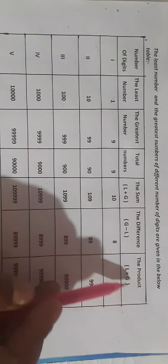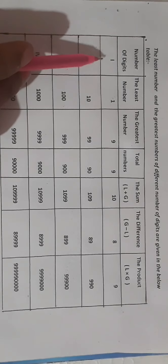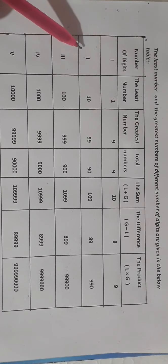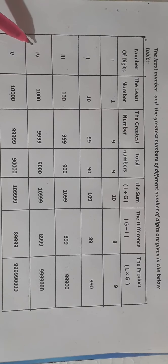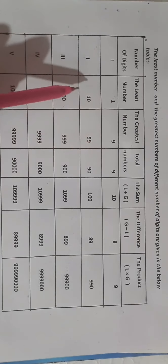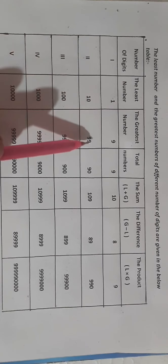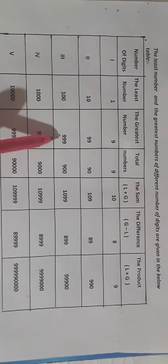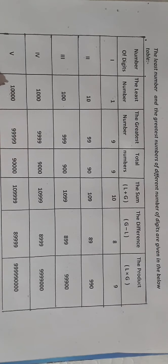The number of digits ranges from one to five. A single digit number is 1 digit, double digit is 2 digits, triple digit is 3 digits, then 4 digits and 5 digits. The least single digit number is 1, greatest is 9. Least double digit number is 10, greatest is 99. Least three digit number is 100, greatest is 999. Least four digit number is 1000, greatest is 9999. Least five digit number is 10,000, greatest is 99,999.